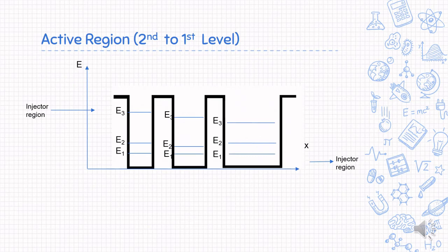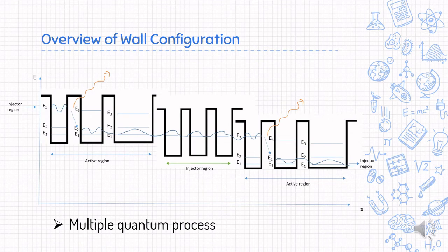Because the quantum well is also engineered such that the wave function in E2 in the second wall coincides with the wave function in E1, the electrons can quickly tunnel to E1 in the third wall. Due to the energy difference, the electron relaxes in the process, releasing energy in the form of phonon, which is heat and lattice vibration. After all this happens, the electron tunnel to the injector region. This is the overview of the quantum wall configuration. We can imagine the electron starts off its journey from the top to the bottom of the steps.